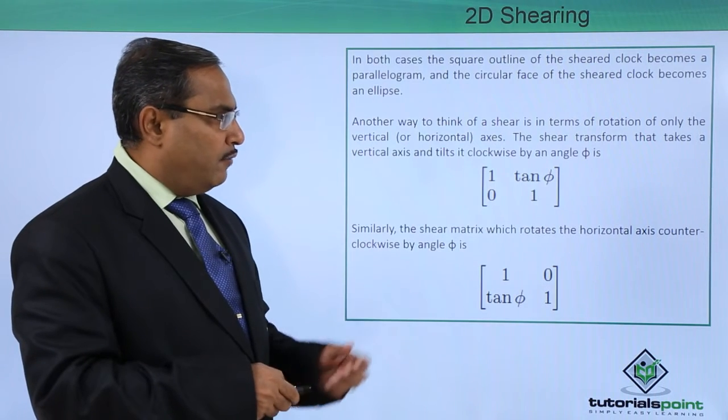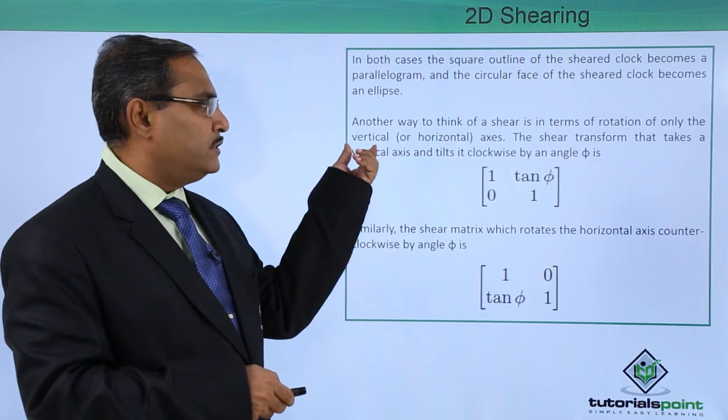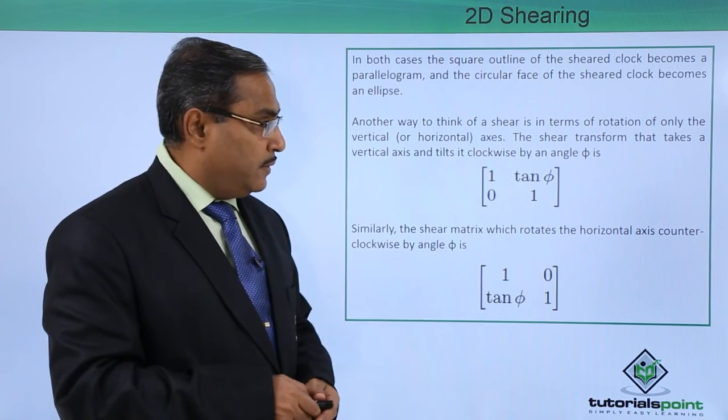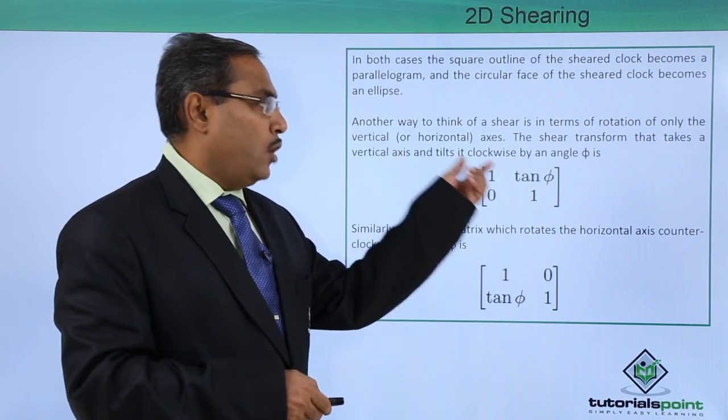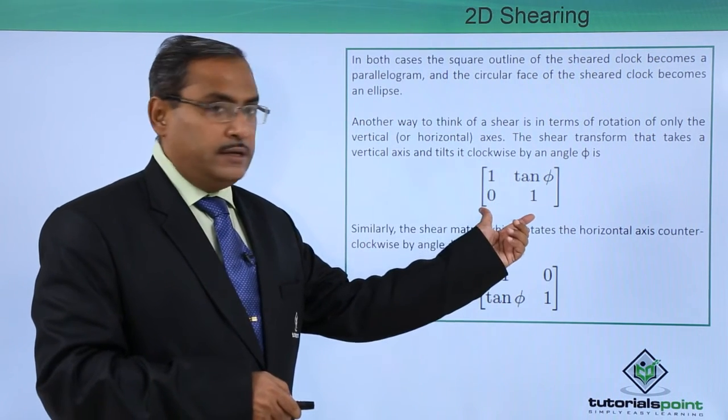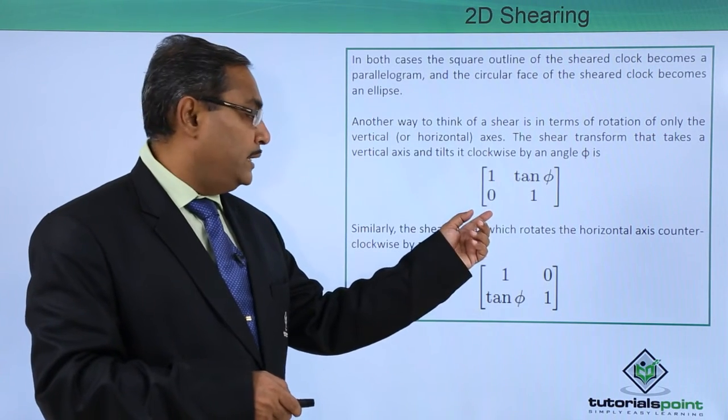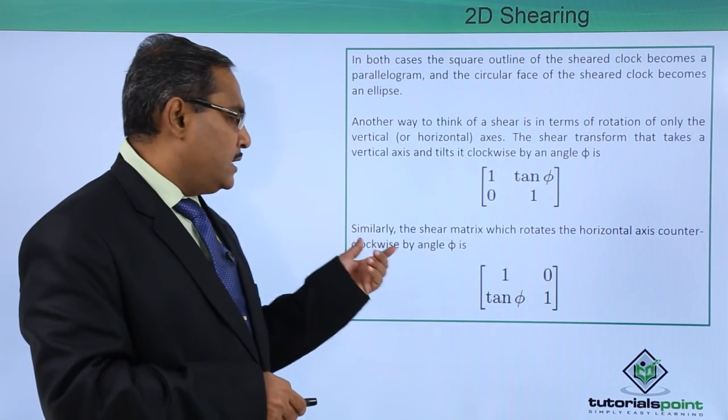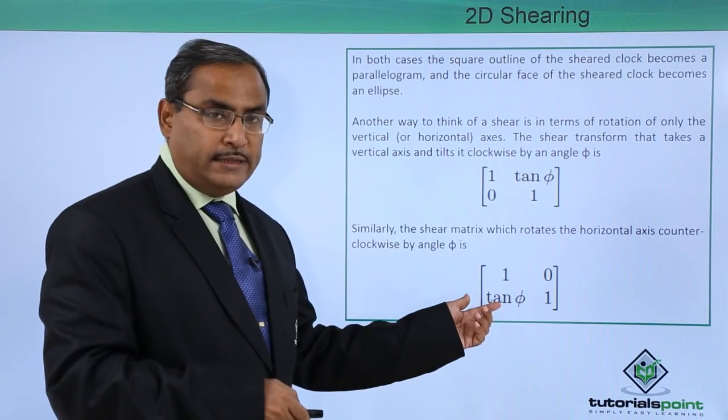Another way to think of a shear is in terms of rotation of only the vertical or horizontal axis. The shear transform that takes a vertical axis and tilts it clockwise by an angle of phi will be the expression, the respective matrix will be this. And similarly, the shear matrix which rotates the horizontal axis counter-clockwise by the angle of phi will be the matrix like this.